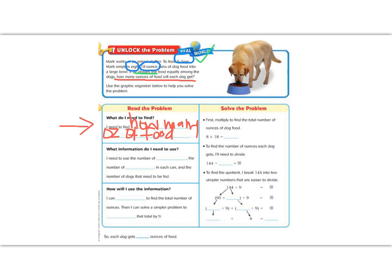So we've used that in our information. So now we have the number eight and the number 18. 18 is the number of ounces in each can. So our second line must be the number of ounces in each can, which means that we also need to know how many cans we have. So I need to use the number of cans, the number of ounces in each can, and the number of dogs that need to be fed.